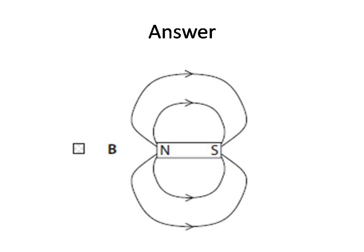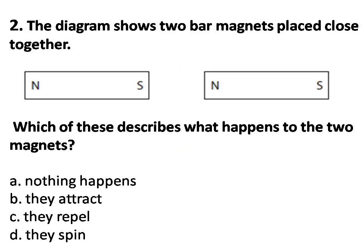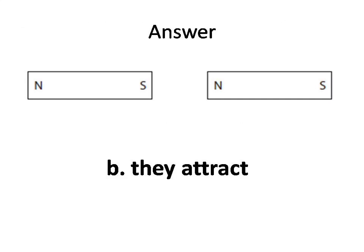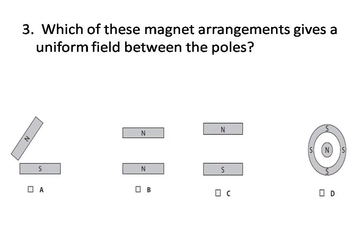Question number two. The diagram shows two bar magnets placed close together. Which of these describes what happens to the two magnets? The options are: A. Nothing happens. B. They attract. C. They repel. D. They spin. Answer is option B — they attract.